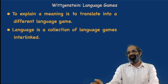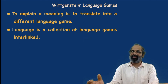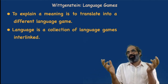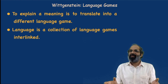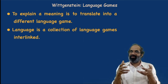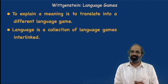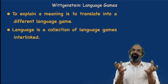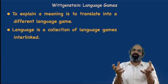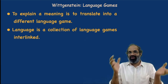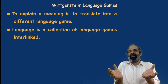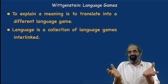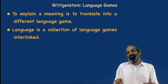Language is a collection of language games that are interlinked. What we called language in the Tractatus was the collection of all possible propositions, but here language is a collection of all language games interlinked. Wittgenstein also uses the notion of 'forms of life' in his later philosophy. A collection of language games specific to a culture can be called a form of life. It is only within a form of life that a specific language game derives its meaning, and only from within a form of life that a word or sentence derives its meaning in a language game.